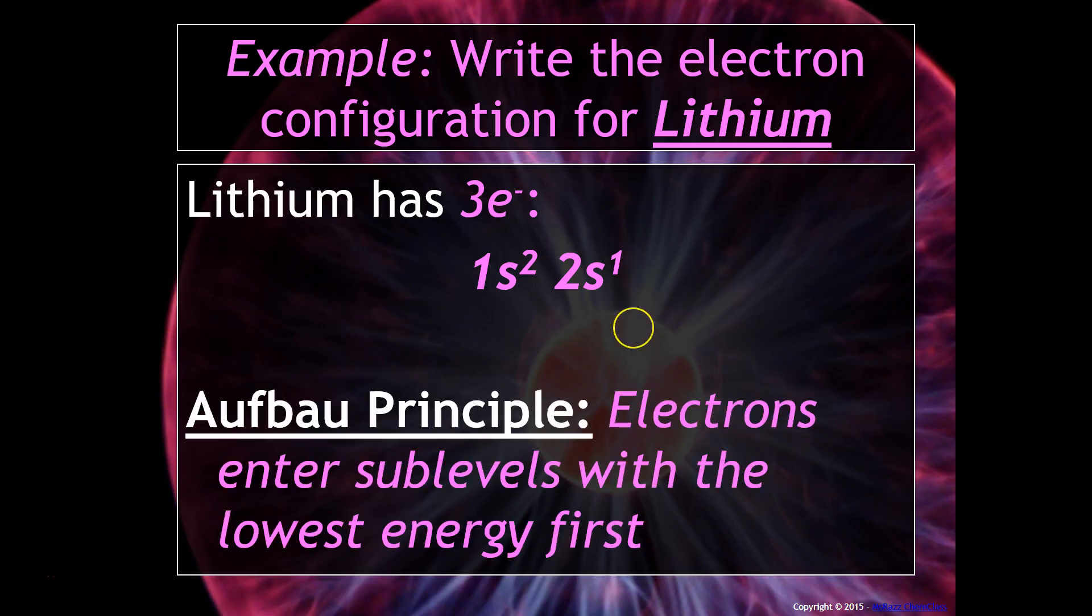Now there's something called the Aufbau principle, which basically says that electrons will enter sublevels with the lowest energy first.